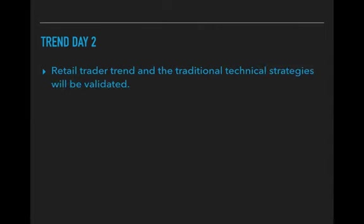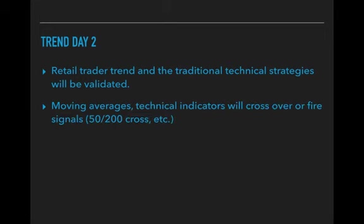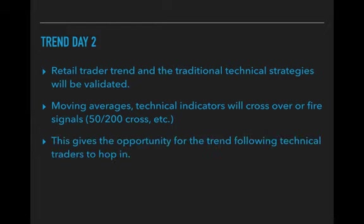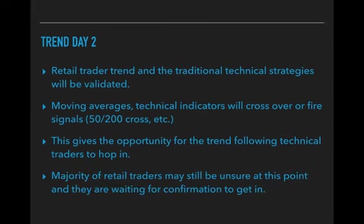Day two of the trend is where the retail trader trend and traditional technical strategies will be validated. This is the only time in the market maker cycle where the market maker trend and the retail trend will line up. You'll see moving averages cross over and fire signals — like the 52/00 cross, the RSI crossing above 50, the CCI or MACD crossing over zero, stochastics — all the indicators that the retail trader uses will give these signals on day two when the trend is validated.